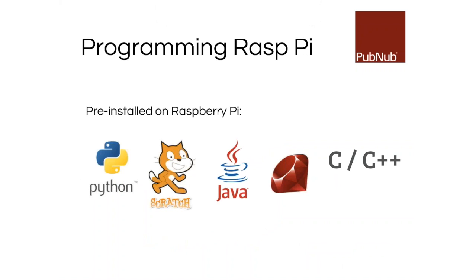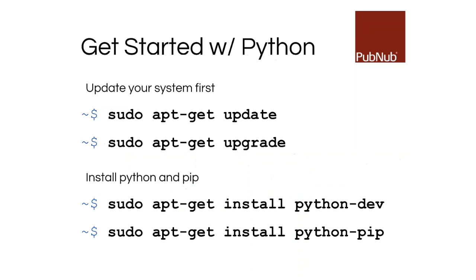You can program on the Raspberry Pi using Python, Scratch, Java, Ruby, C, and C++ — they're already there. And of course, since this is Linux-based, you can install and use any other languages you want that work on Linux.